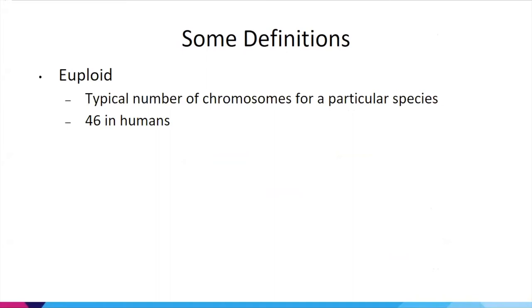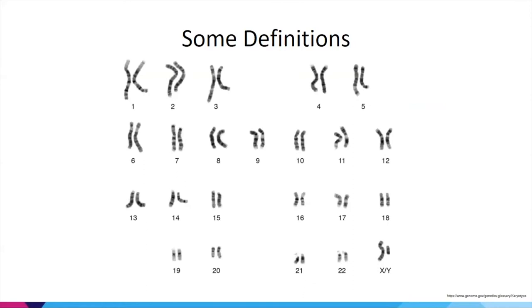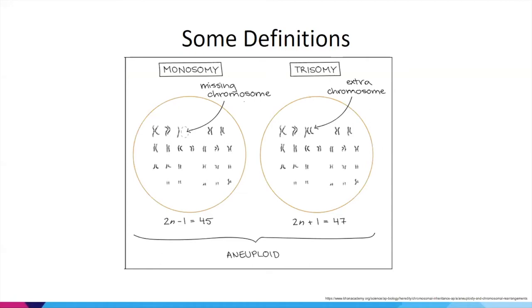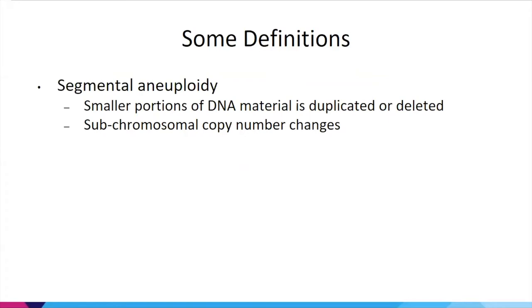A couple of definitions that will be helpful: the first is euploid, which indicates a typical number of chromosomes for a particular species. For humans, that's 46 chromosomes. Aneuploid, by contrast, is when we see an atypical number — either monosomy, a missing chromosome, or trisomy, an extra chromosome — and this can involve more than one chromosome, making it complex.